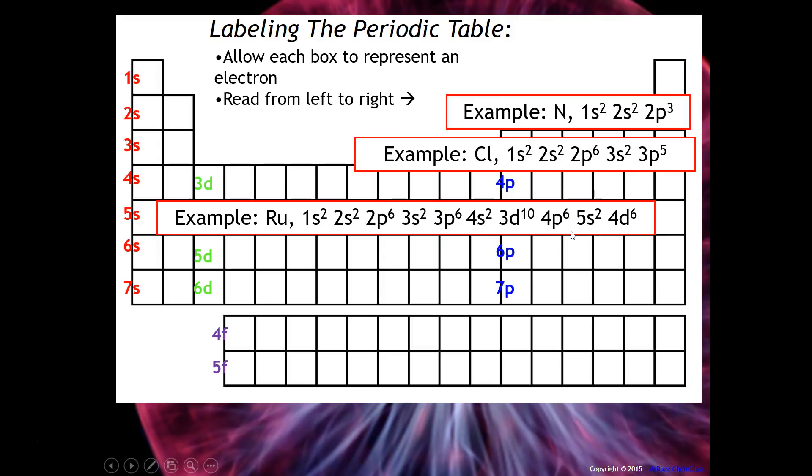You don't need the handout that has you drawing arrows from energy level to energy level, because all you really need is the periodic table. At this point you just need to know how to label the periodic table so that you can read it.